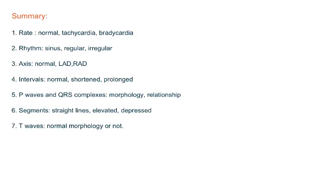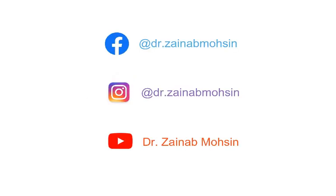So these are the seven steps in summary on how to approach an ECG. First, look at rate — normal, tachycardia, or bradycardia. Second, rhythm — is it sinus, regular or irregular? Third, axis — normal, left axis deviation, or right axis deviation? Fourth, intervals — is it normal, shortened or prolonged? Fifth, P-waves and QRS complexes — is their morphology normal, and is their relationship normal? Sixth, segments — are the straight lines elevated or depressed? And finally, T-waves — is the morphology of the T-wave normal or not? In the next lecture we'll discuss some important ECGs that are commonly asked in our exams.